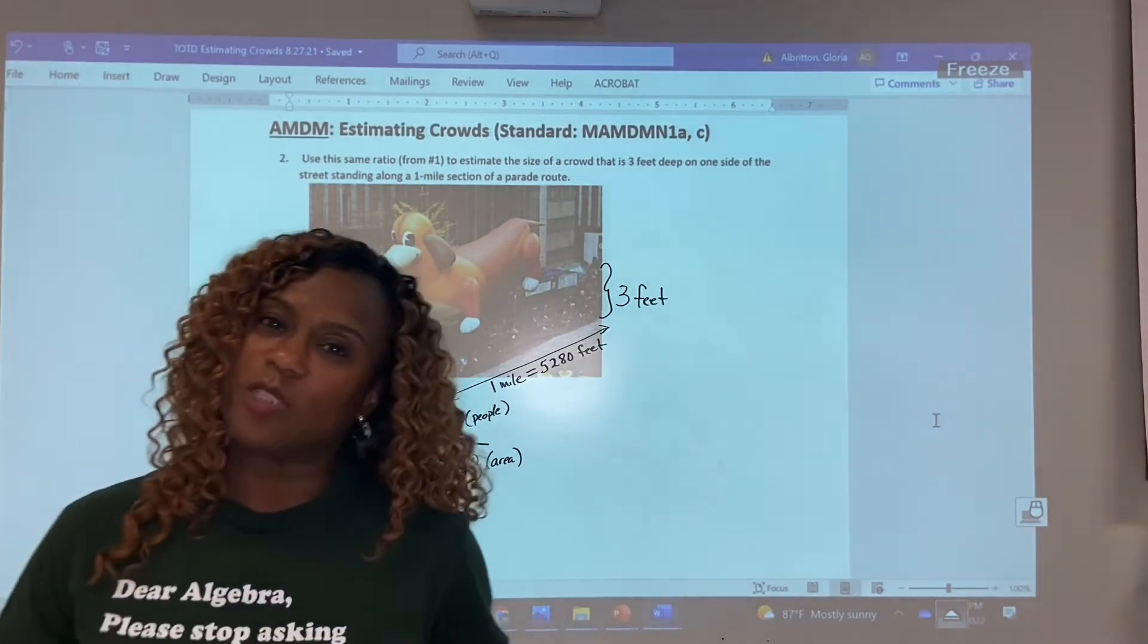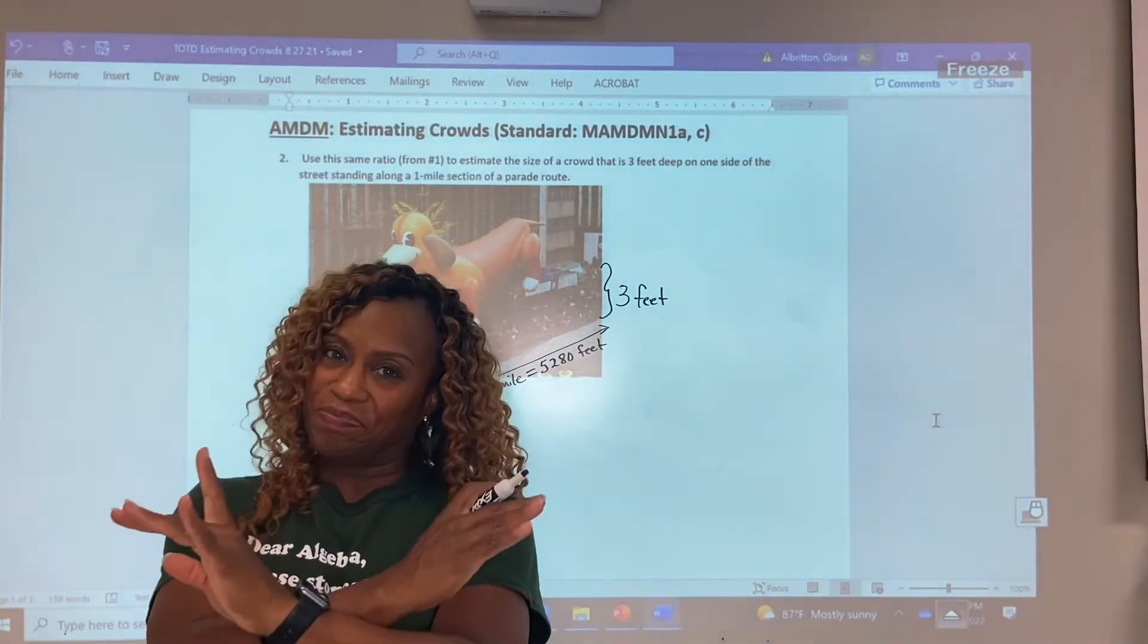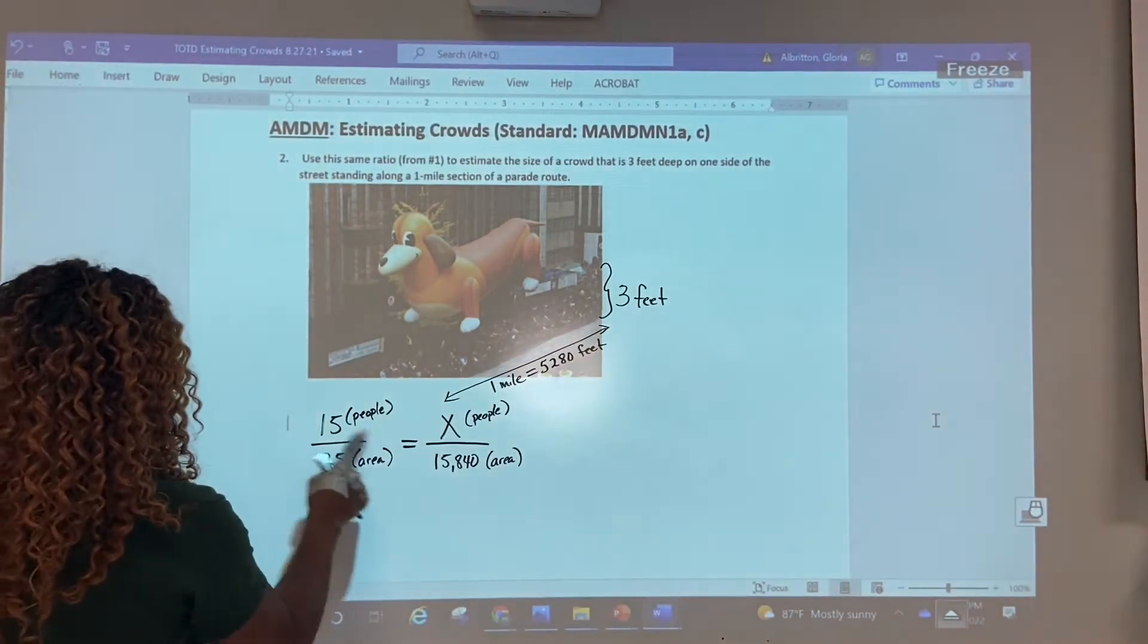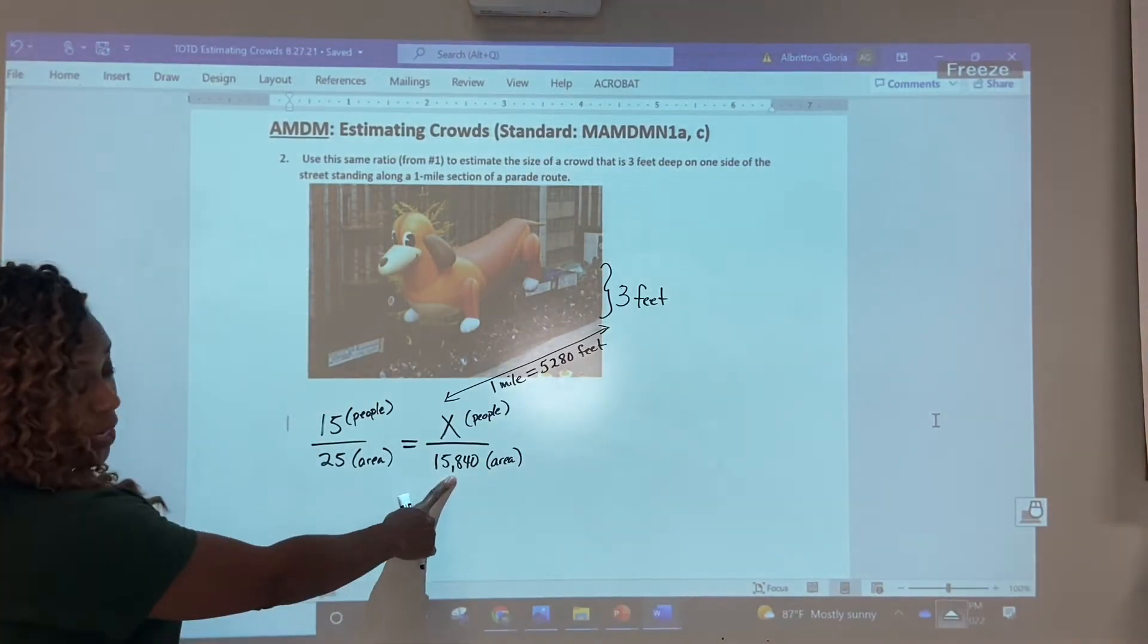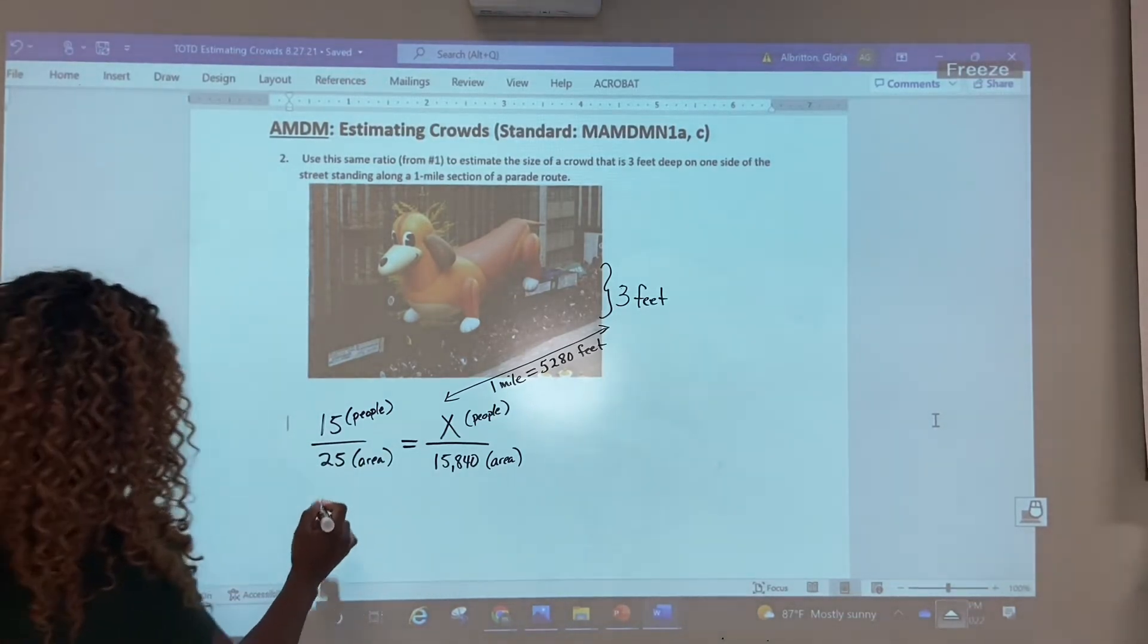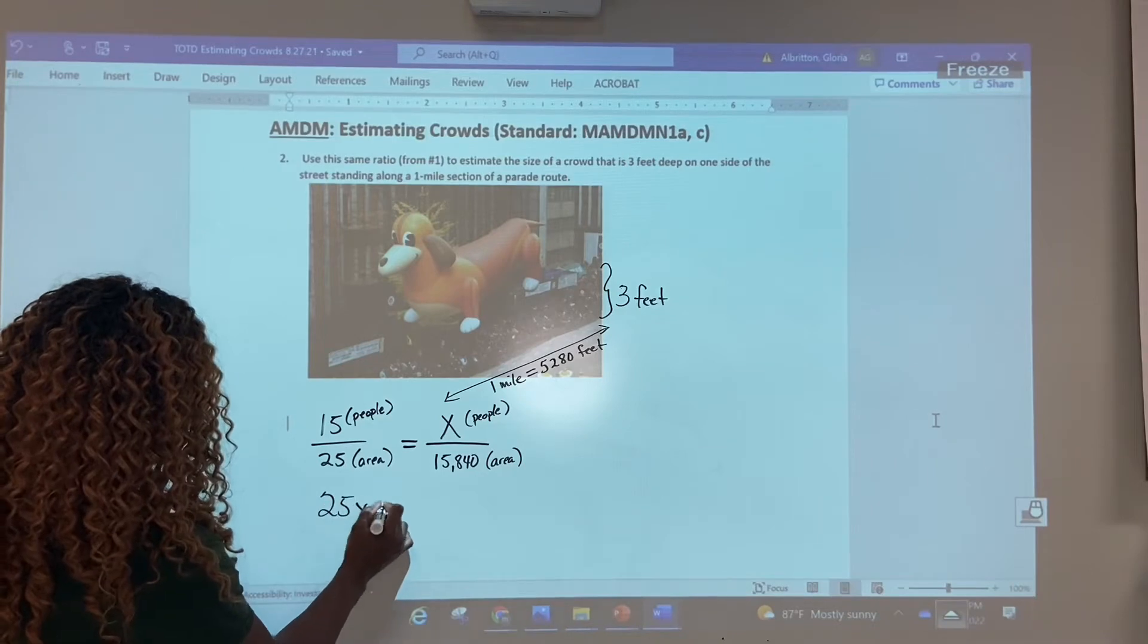Now, how do we solve a proportion? We cross multiply. So let's go ahead and do that now. So when we cross multiply, we'll do 15 times 15,840 and 25 times x. Let's go ahead and do the 25 times x. That's easy. That's 25x.